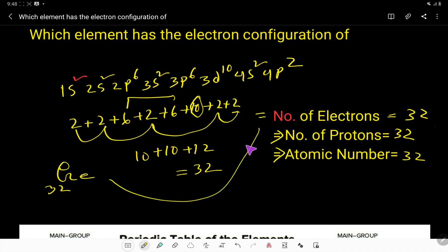Its number of electrons will be 32, the number of protons will be 32, its atomic number is 32, and its electronic configuration will be this. Thank you for watching this video.